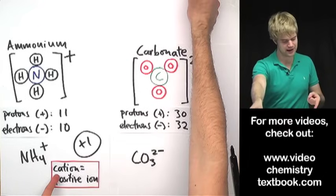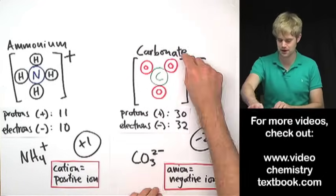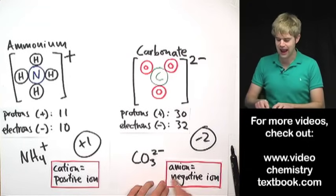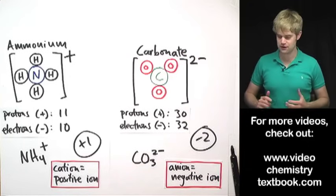We can call carbonate a polyatomic anion, a negative ion.